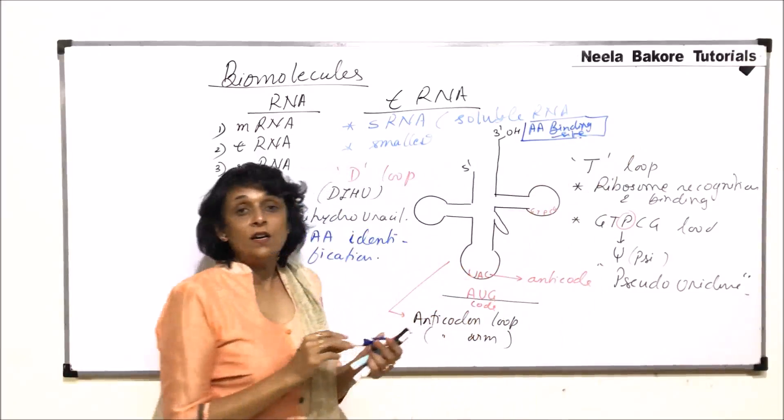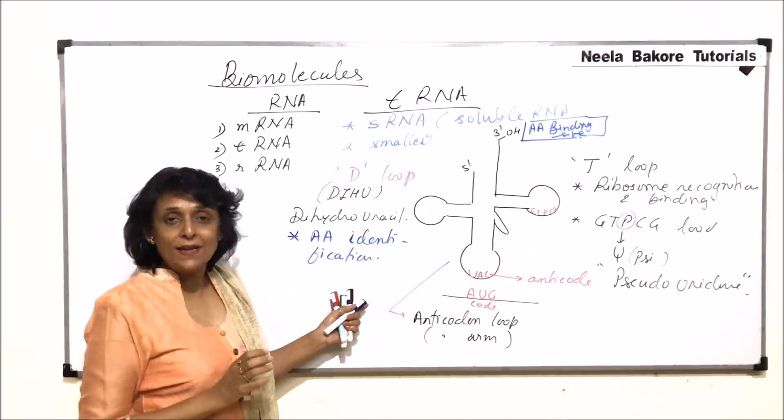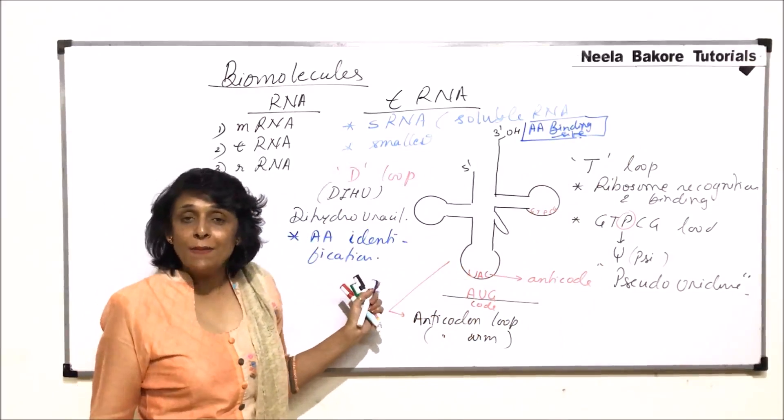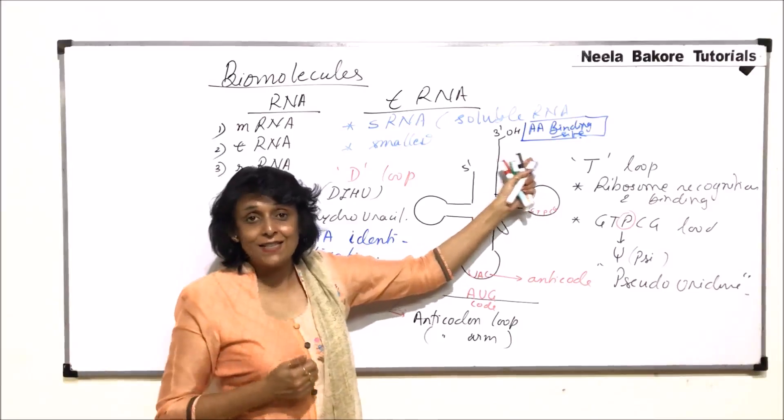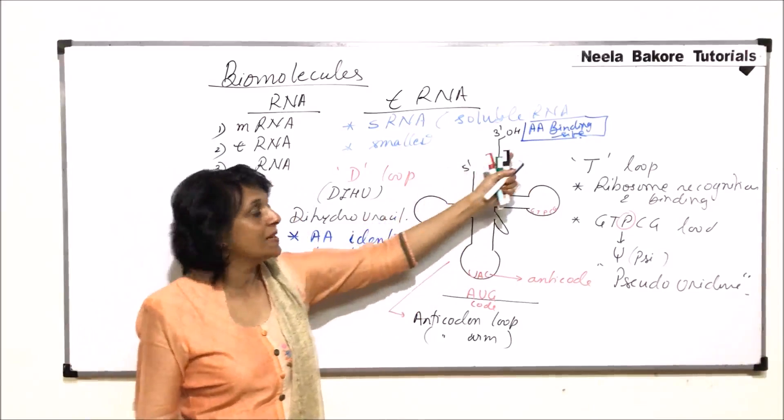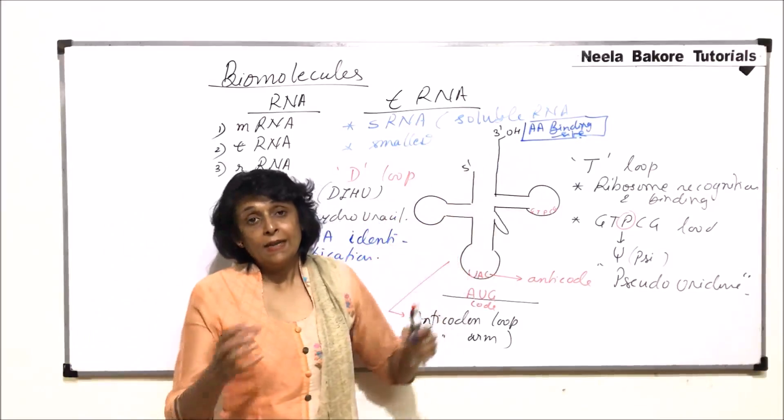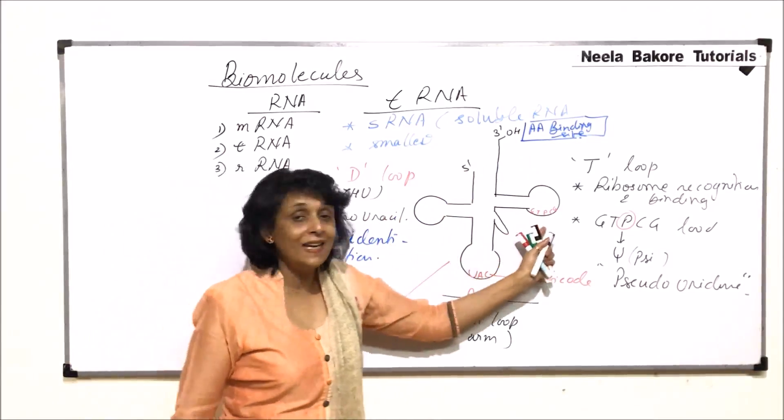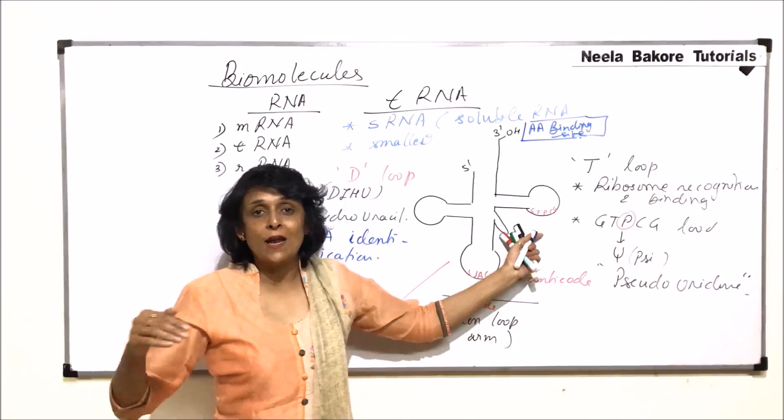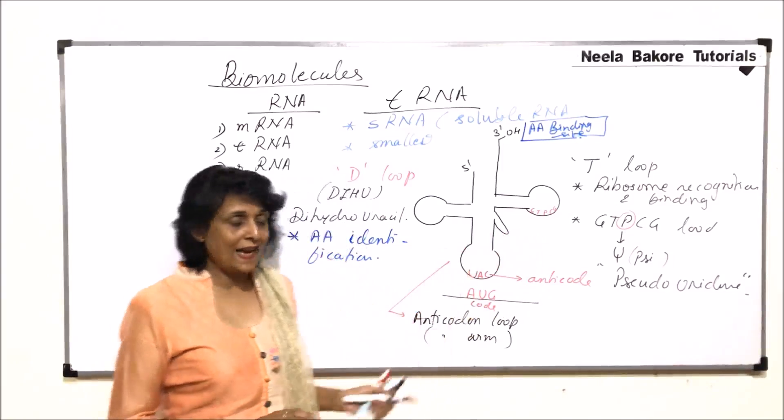So there are four loop or loop-like structures. All of them have their function but the amino acid which is recognized by D-loop actually comes and binds here. There are many ribosomes where protein synthesis takes place. So T-loop is going to recognize to which ribosome it has to go and attach to.